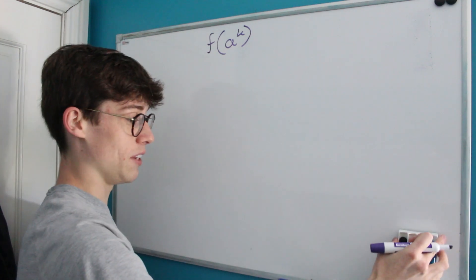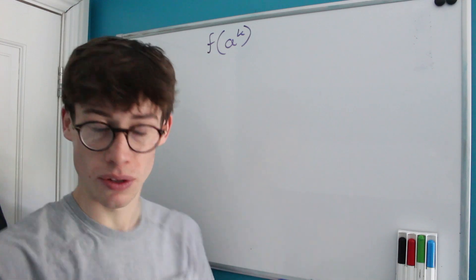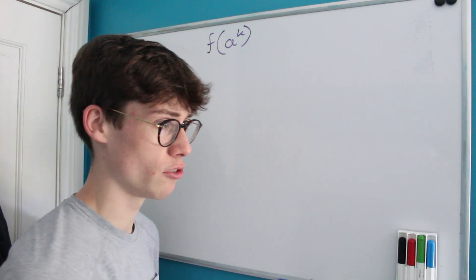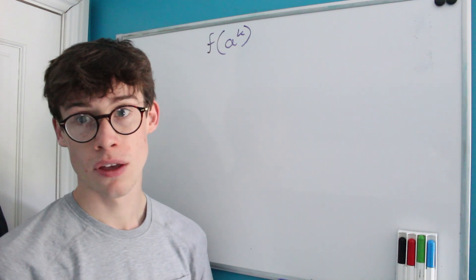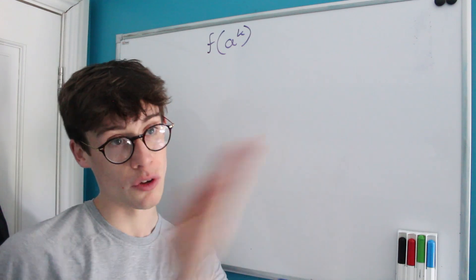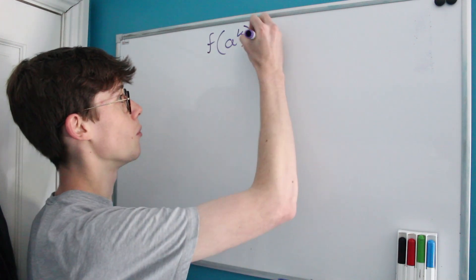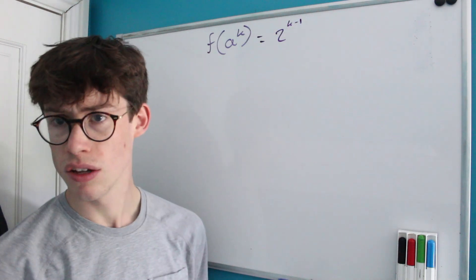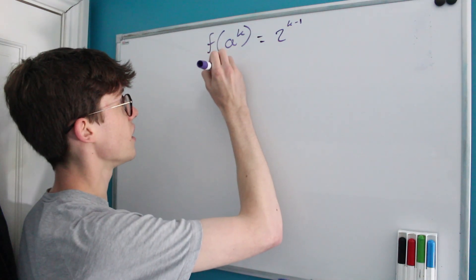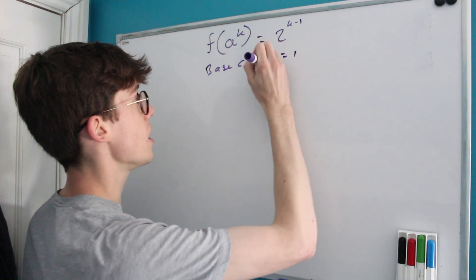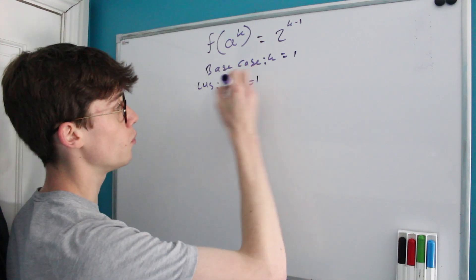One fascinating property of Pascal's triangle is that if you sum all numbers on a given row, you get the corresponding power of 2. So summing all entries on row k−1 gives 2^(k−1). That's our conjecture: f(a^k) = 2^(k−1). The base case is k = 1: on the left, f(a) = 1 since a is prime; on the right, 2^(1−1) = 2^0 = 1. The base case holds.